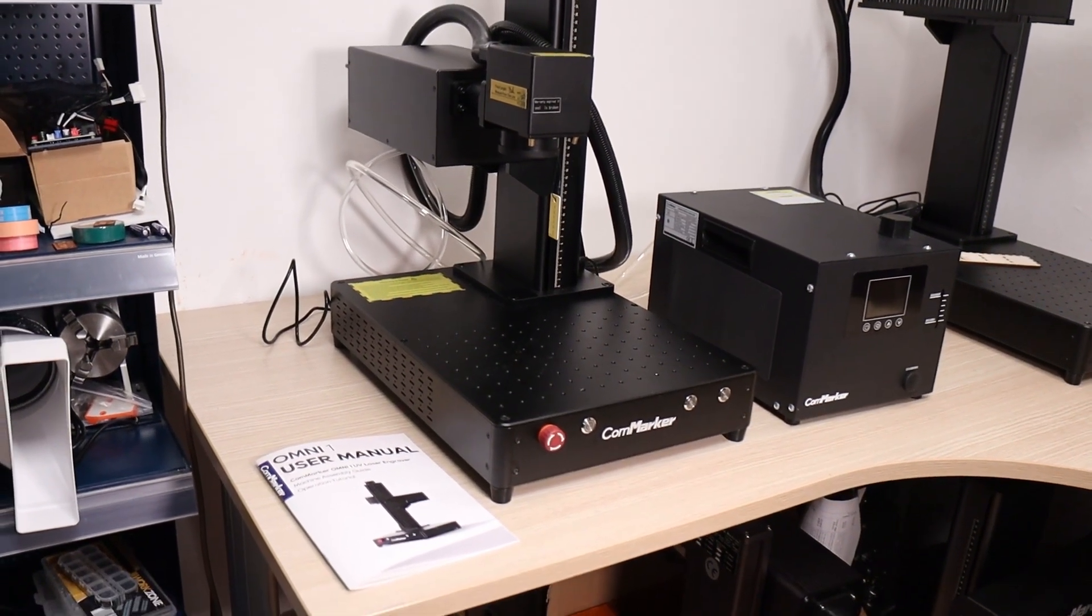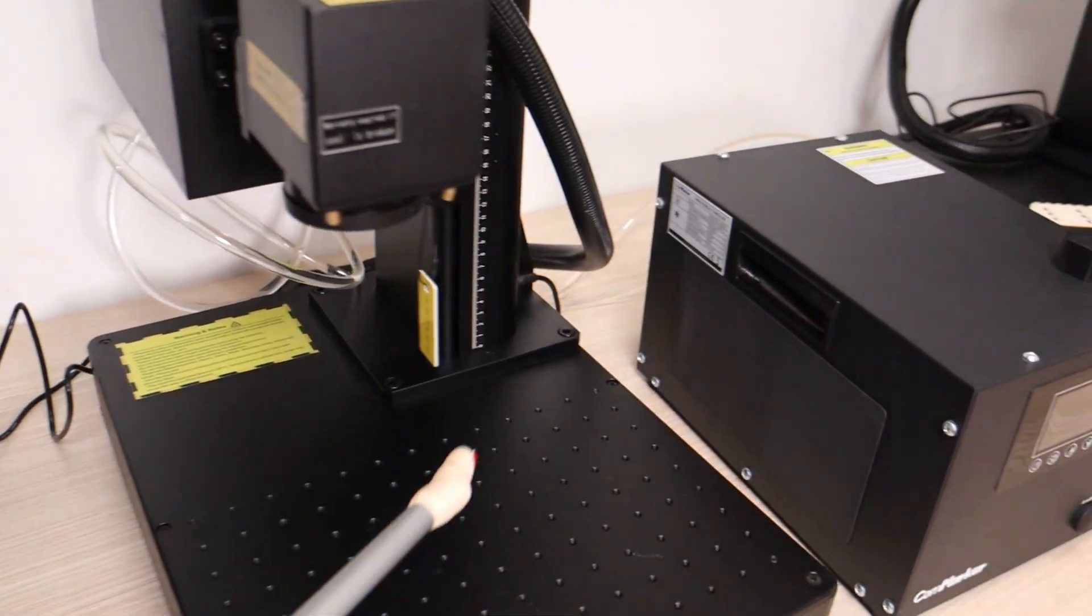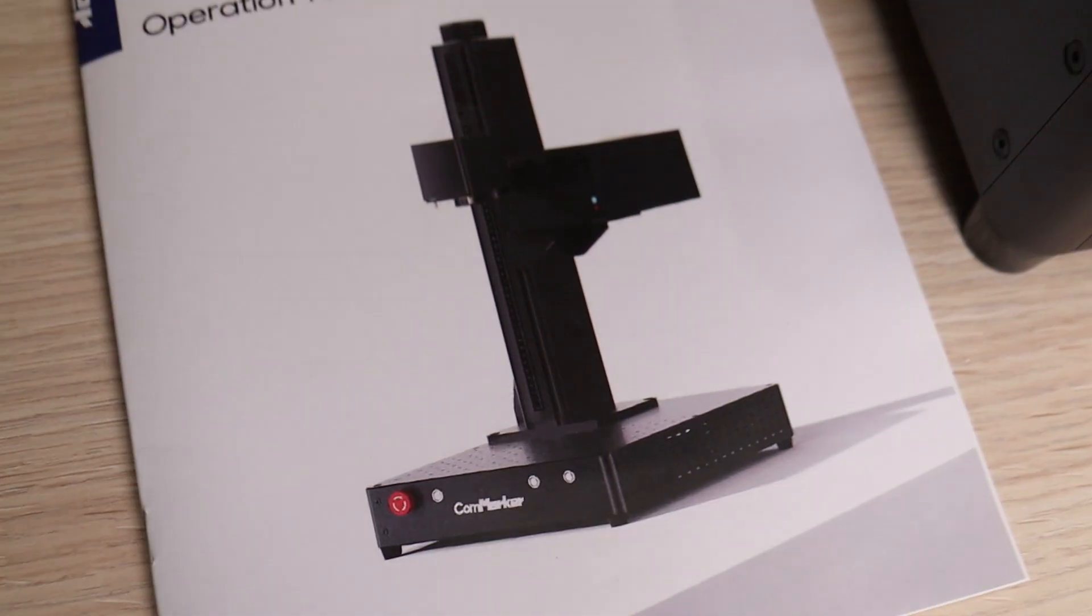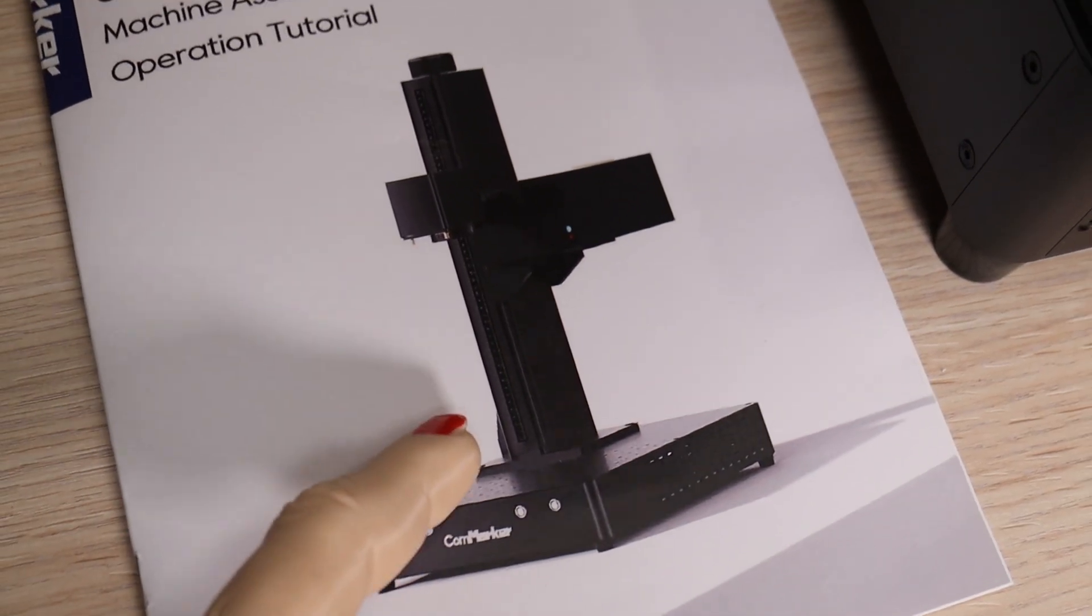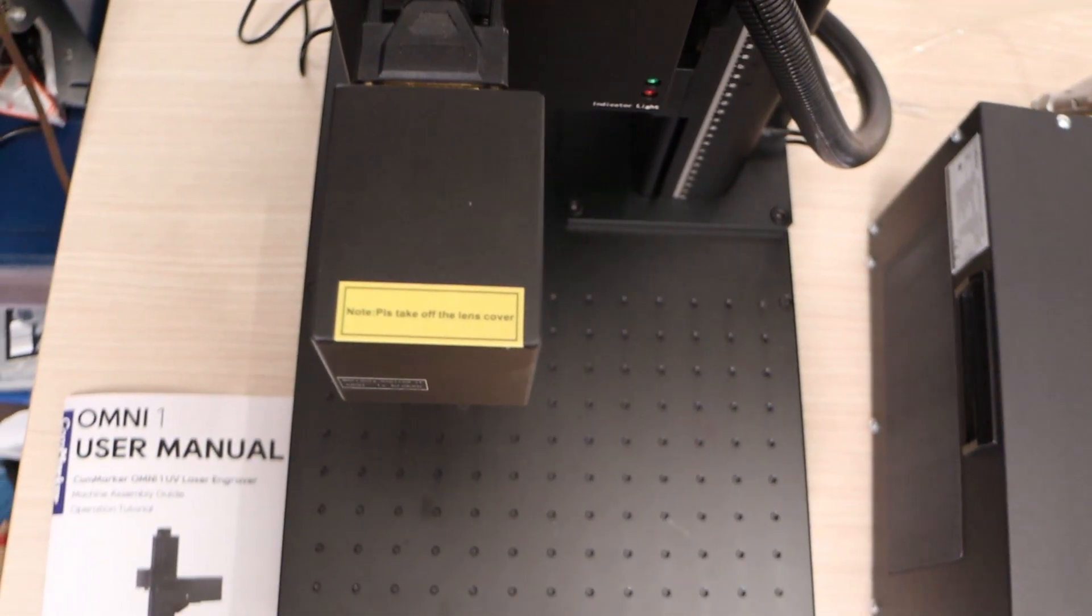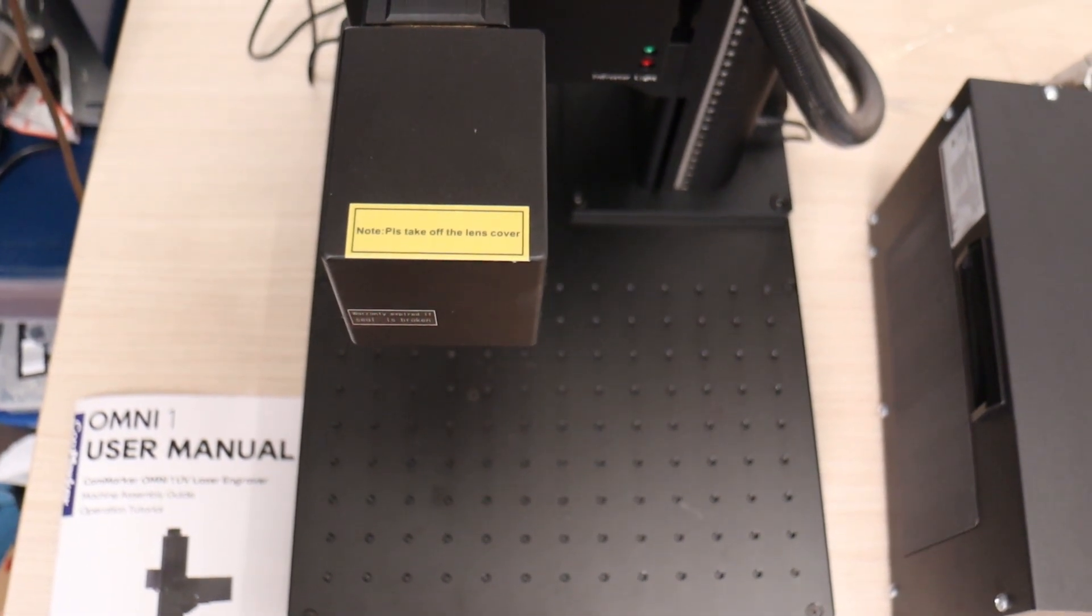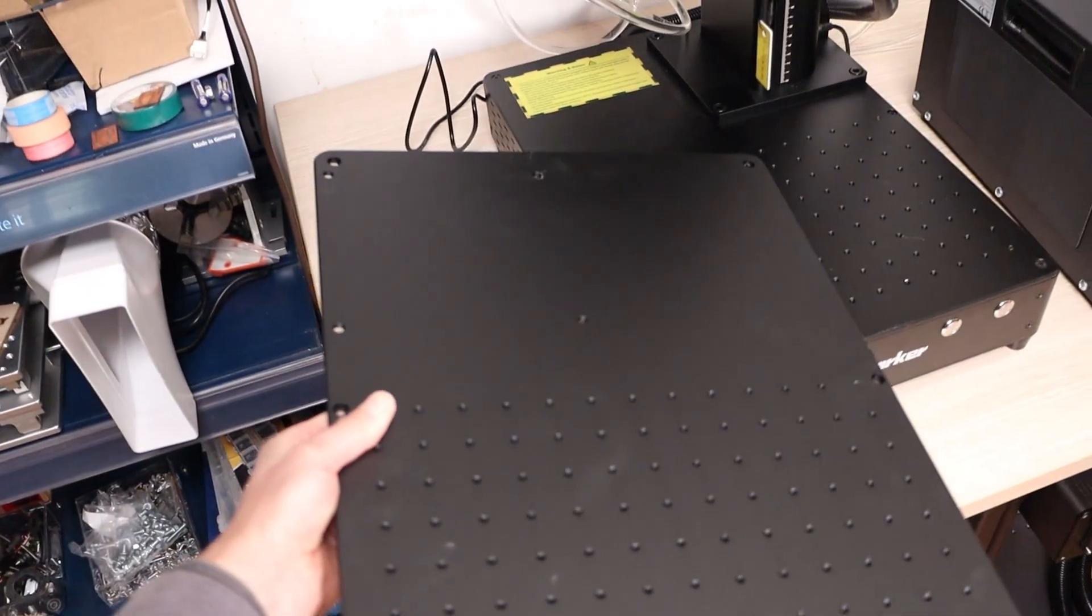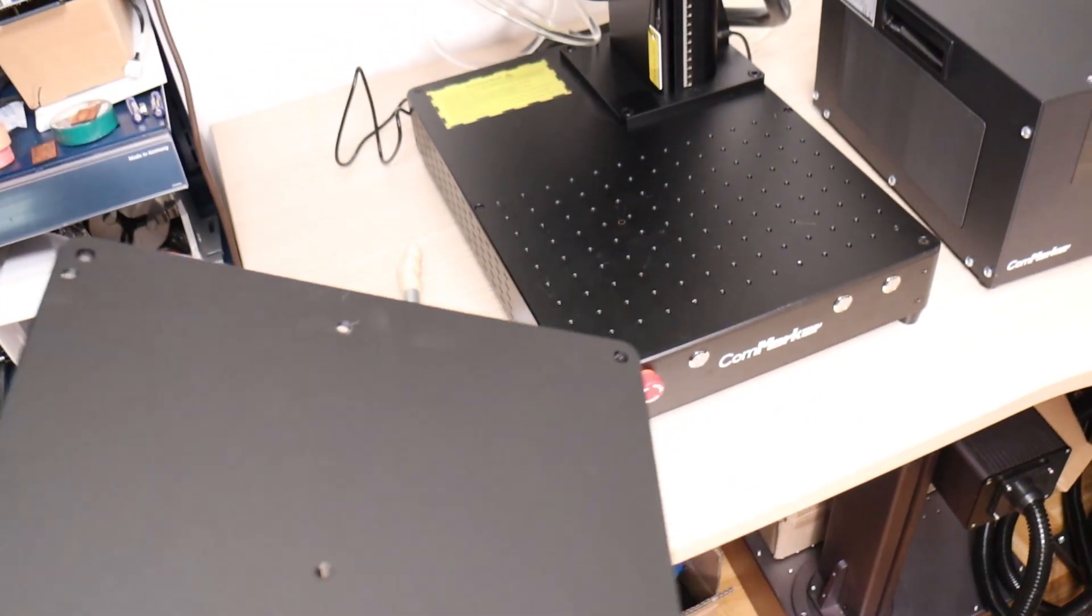But first, a quick disclaimer. My machine is a prototype unit, and it originally had the Z-axis column mounted on the opposite side due to using a different base plate. As a result, the laser head was not positioned in the center of the machine. However, I received the correct Z-axis plate midway through recording this video, so you may notice both configurations appearing throughout.